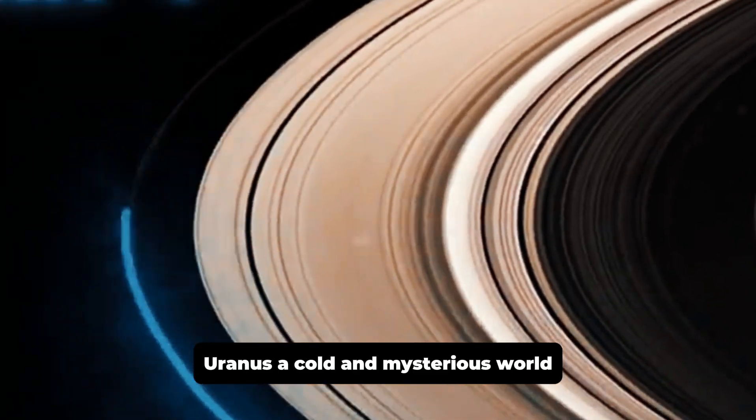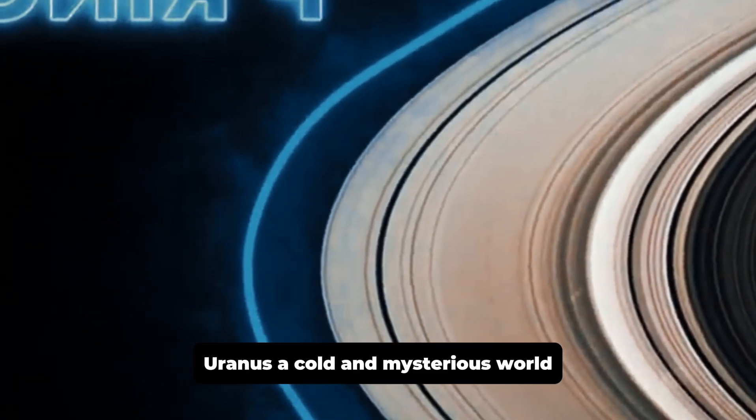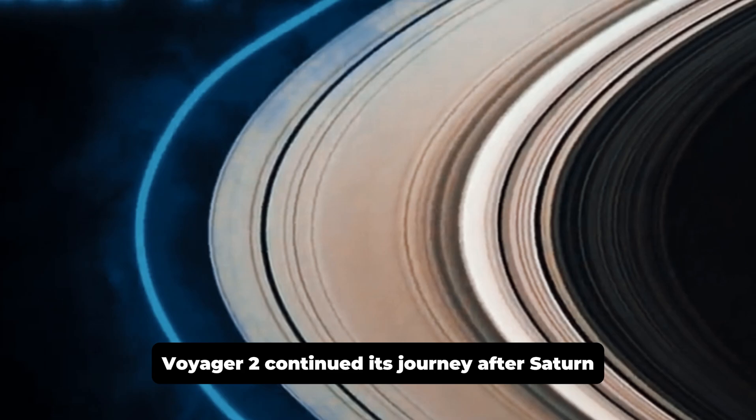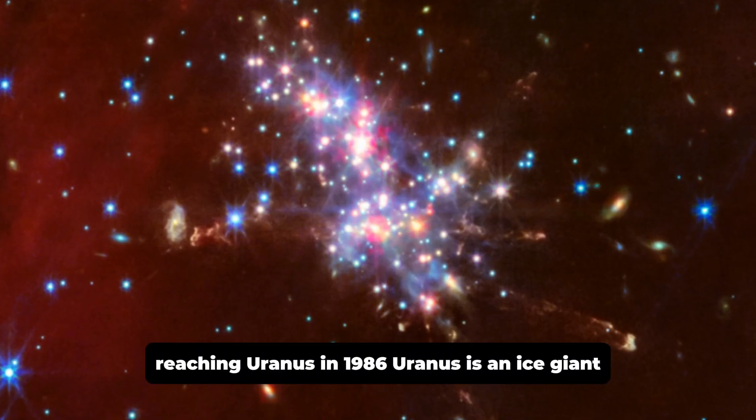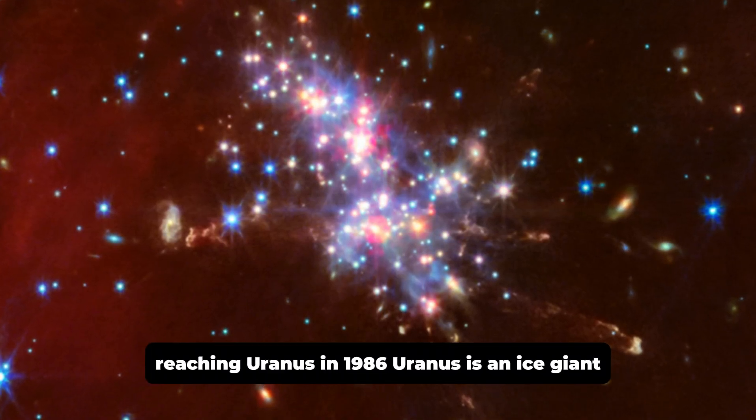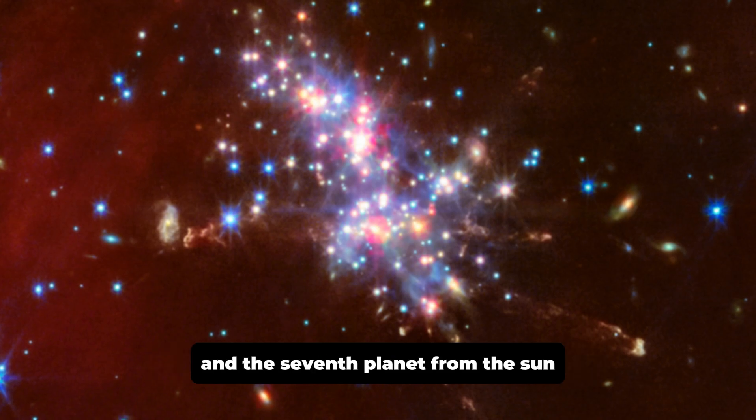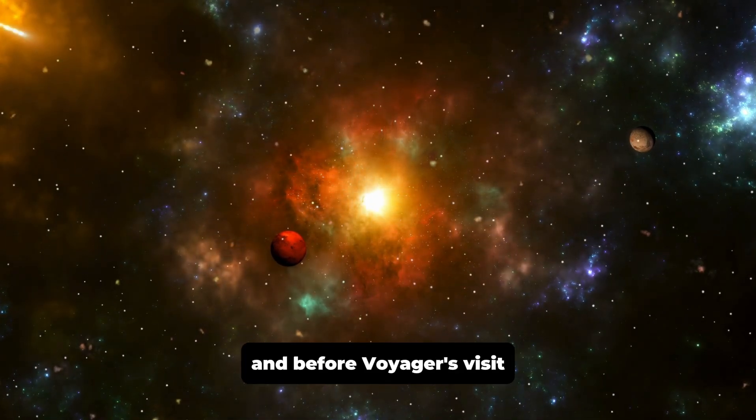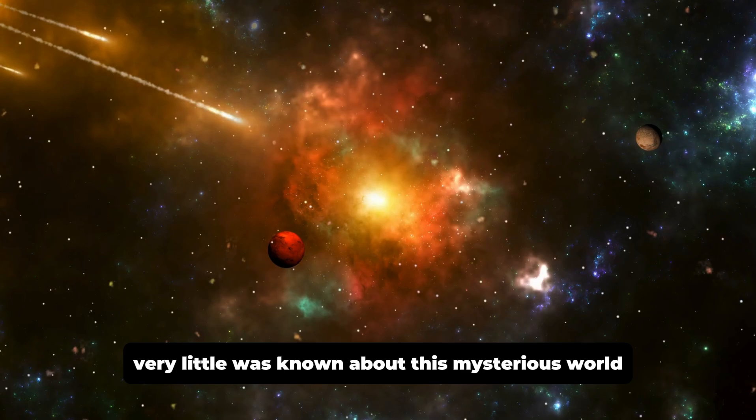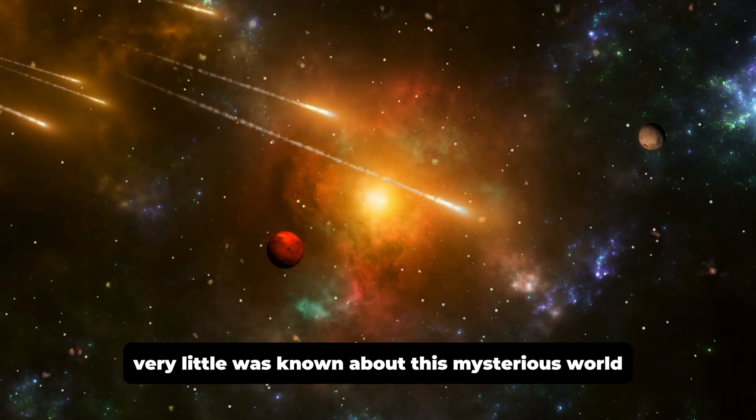Voyager 2 continued its journey after Saturn, reaching Uranus in 1986. Uranus is an ice giant and the seventh planet from the Sun, and before Voyager's visit, very little was known about this mysterious world.